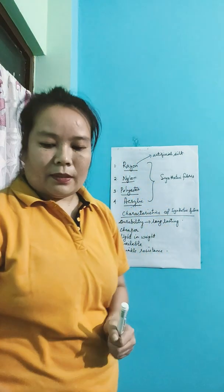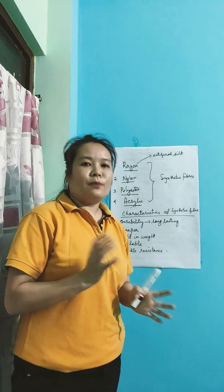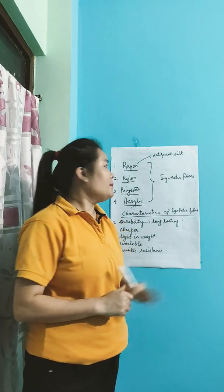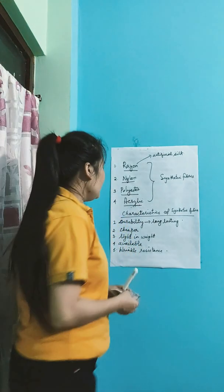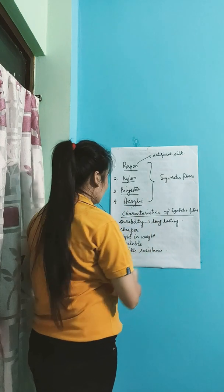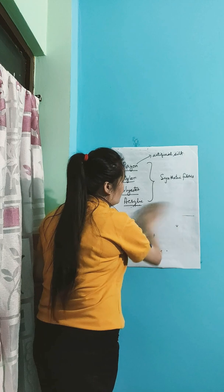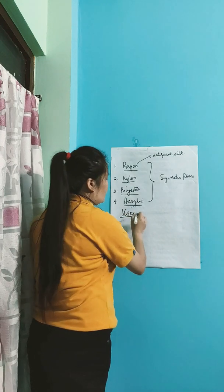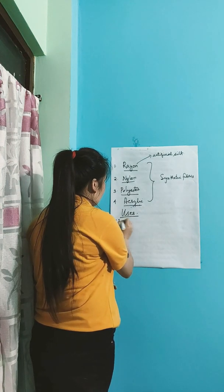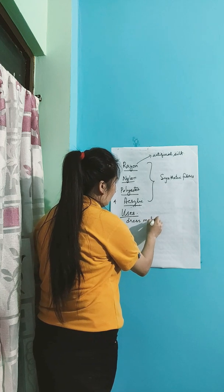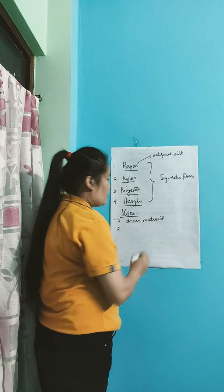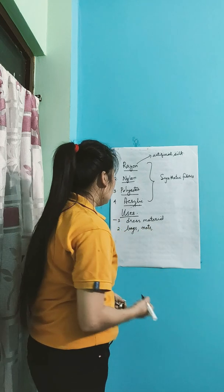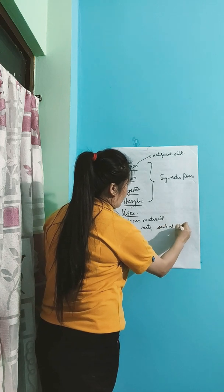I hope you are now clear on wrinkle resistance and why synthetic fibers are more beneficial — they dry quickly, meaning low maintenance is required. Now let us see the common uses of synthetic fibers. They are used for dress material, for making bags, for making fishing nets, and for sails of boats.